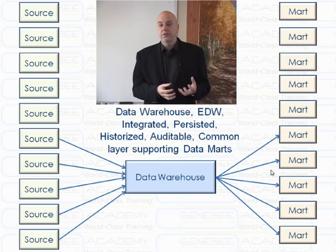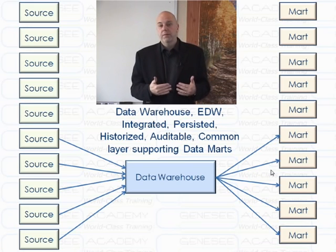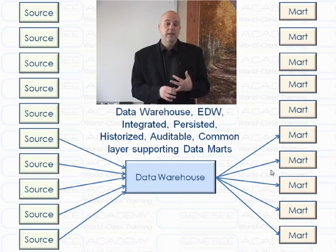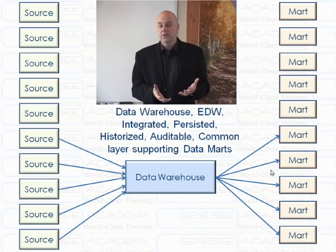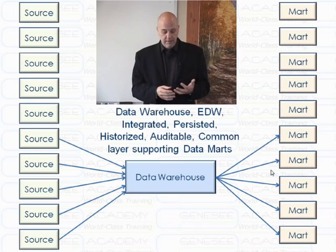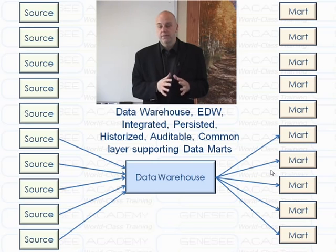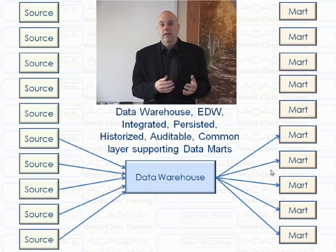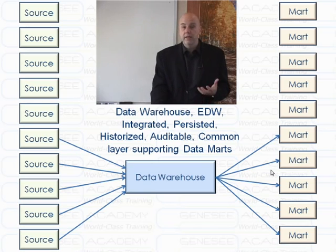It's also a common layer supporting multiple data marts. The Bill Inmon original definition for warehousing is integrated, non-volatile, time-variant, subject-oriented data. Is this true here? Of course it is. It's integrated; it's time-variant, meaning we have multiple time slices of history; it's non-volatile because it's not being deleted or updated — it's persisted over time; and it's integrated around a subject area, or subject-oriented, based on business keys. So that's a big differentiator with the warehouse itself.